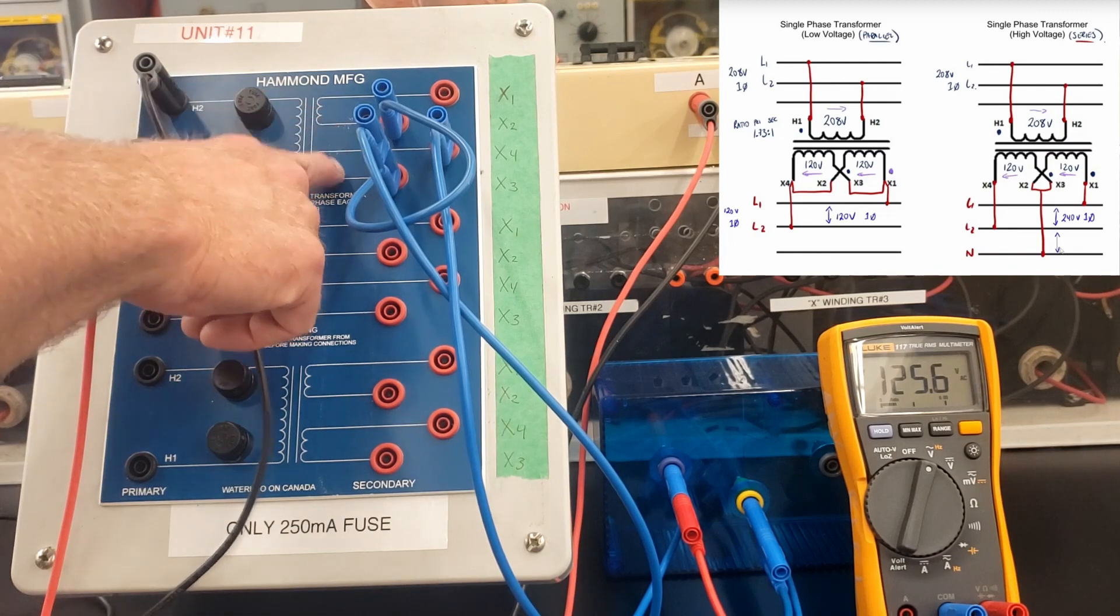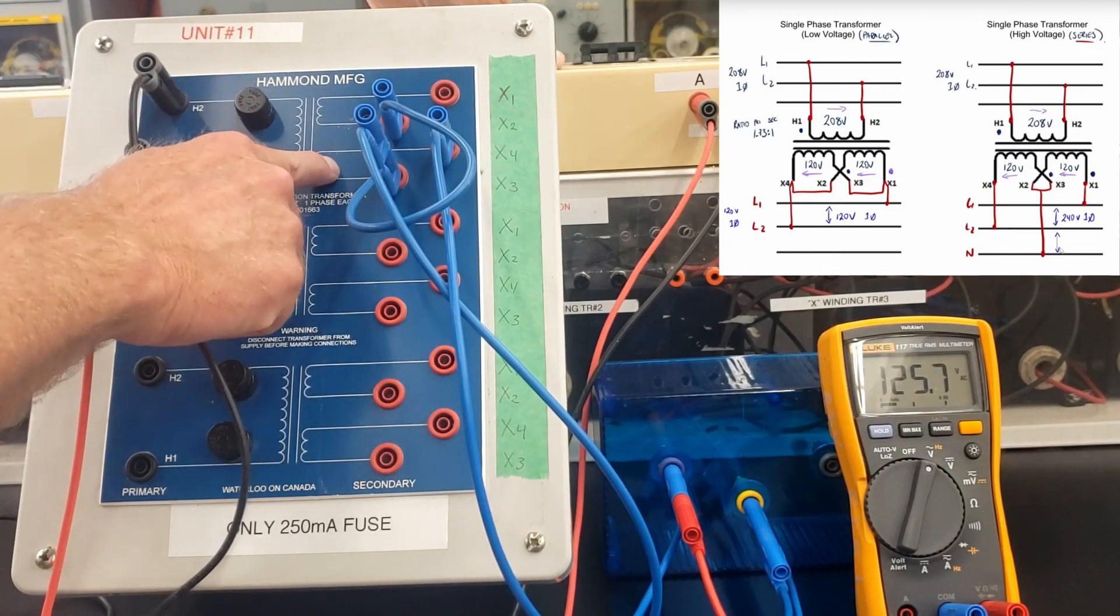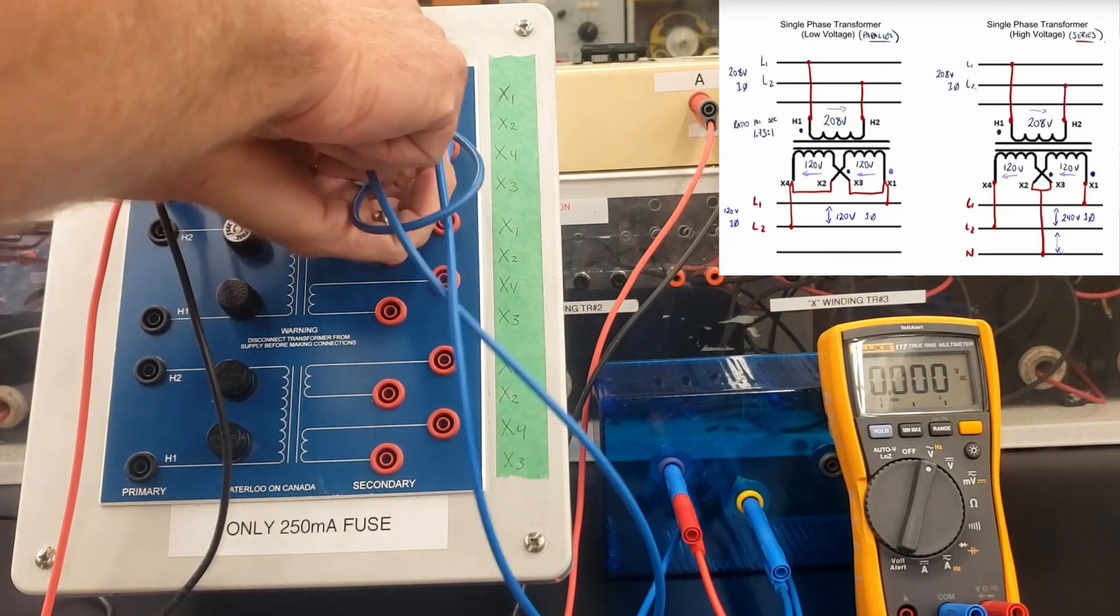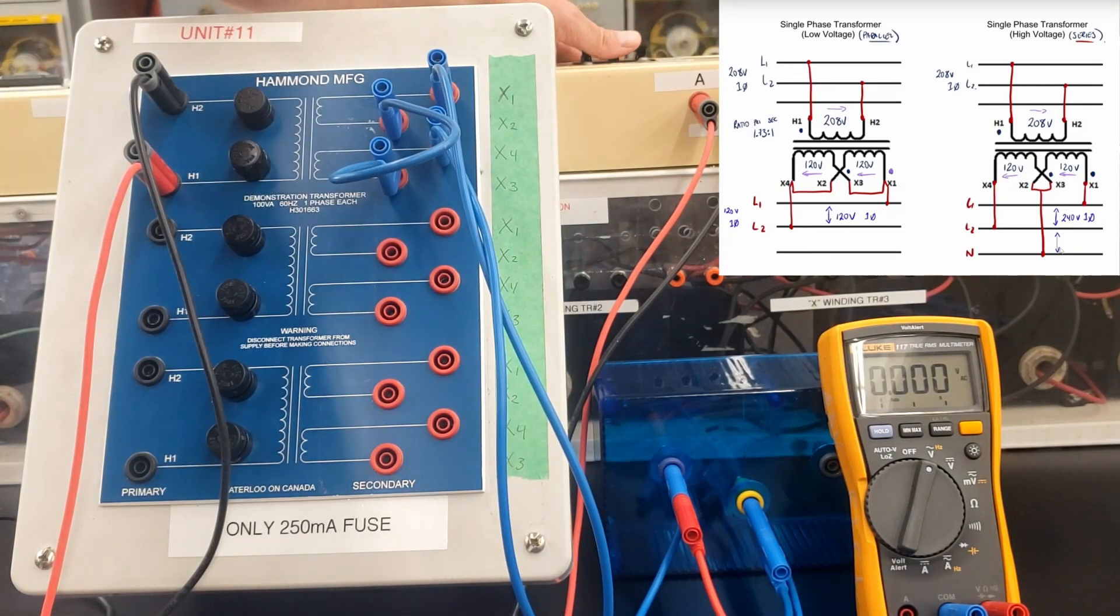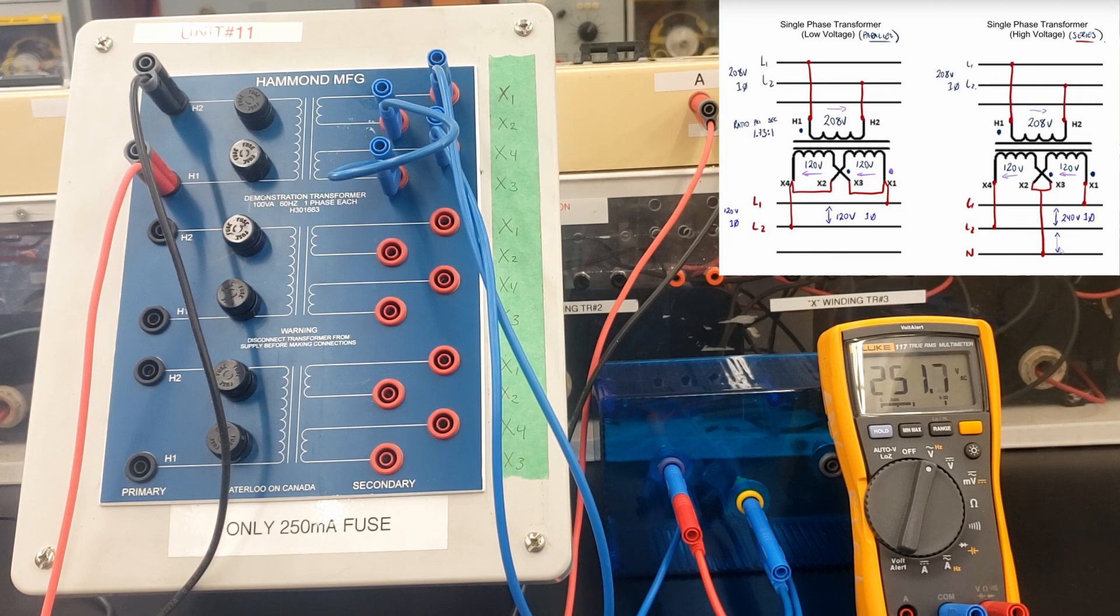Once we jumper X2 and X3, we create a series connection. And that provides us with the higher output voltage. We have 120 volts available on each of these secondary windings when we series those connections up together. Then, on the outer connections between X1 and X4, we should see the sum of those voltages being 240 volts. Again, we're seeing 250 because there's no physical load on the transformer.